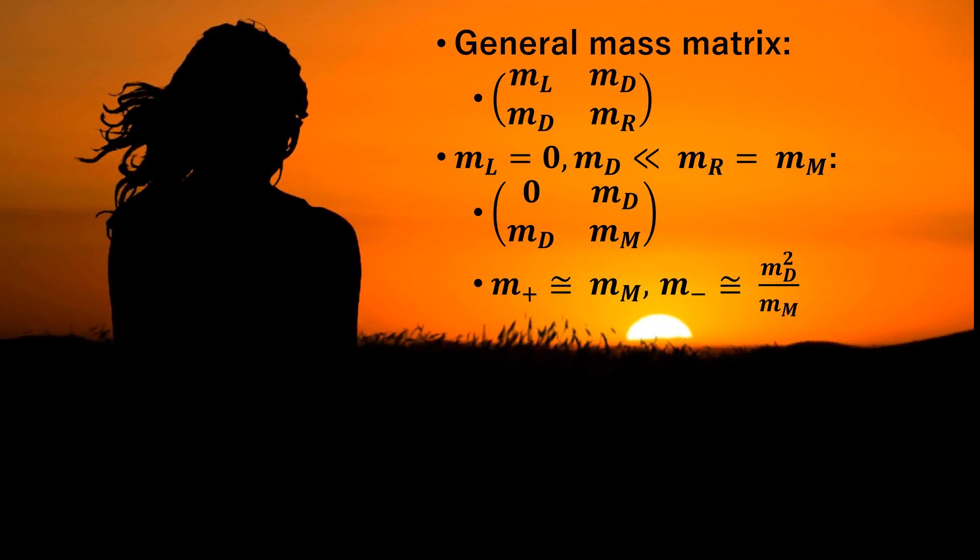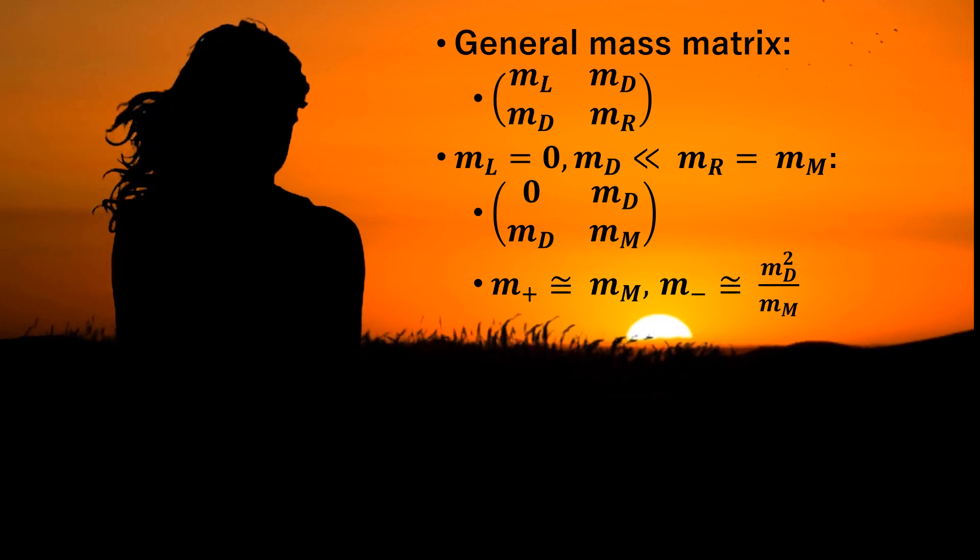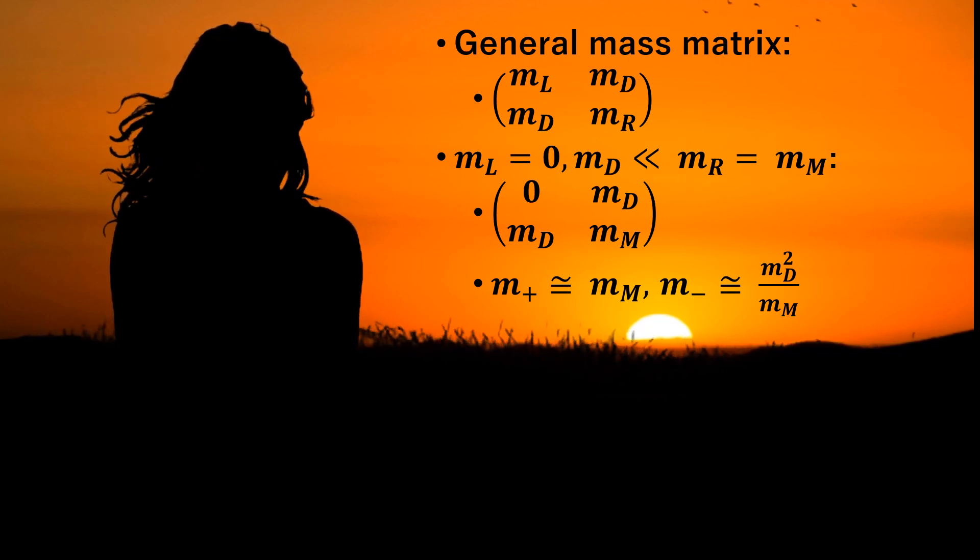Thus, for ML equals zero and MR equals MM Majorana mass, there remains a mass matrix that satisfies the underlying symmetry and allows Majorana particles.